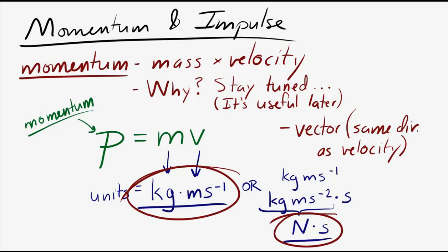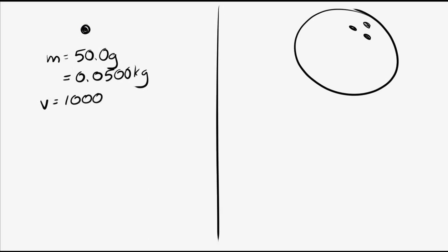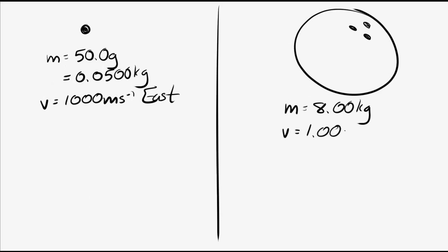Momentum is affected by both mass and velocity. A larger mass gives a larger momentum; a larger velocity also gives a larger momentum. Consider a ping-pong ball with a mass of 50 grams (0.05 kg) moving at 1,000 meters per second east, and a bowling ball with a mass of 8 kilograms moving at 1 meter per second east.